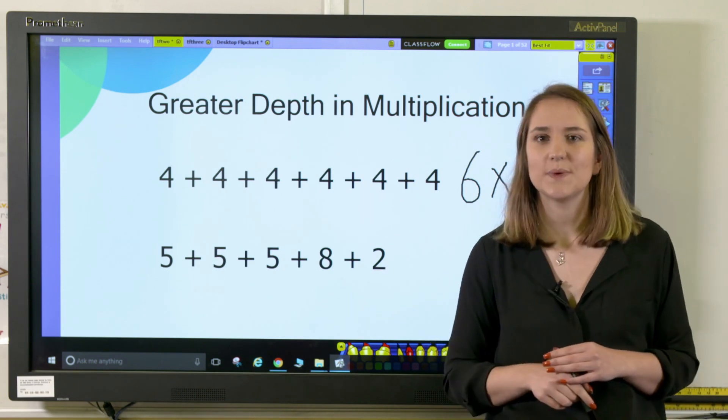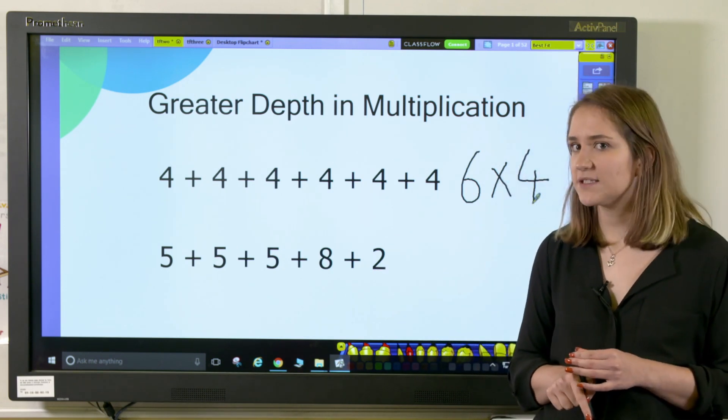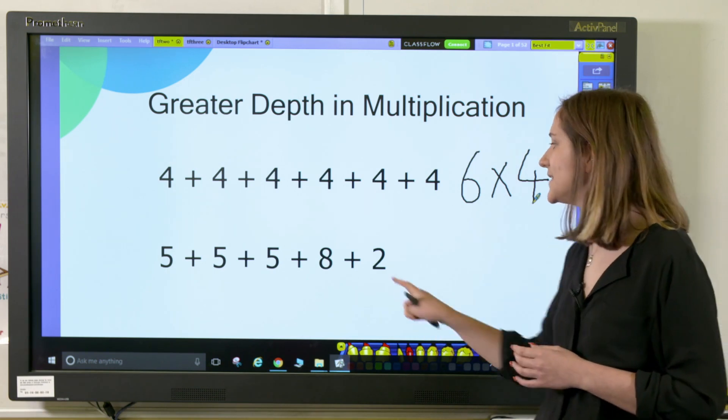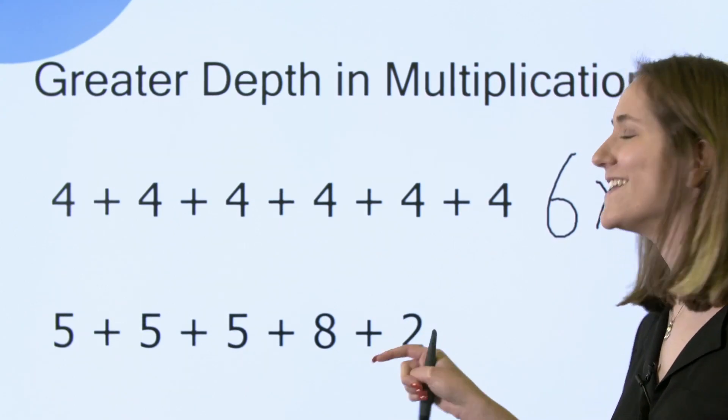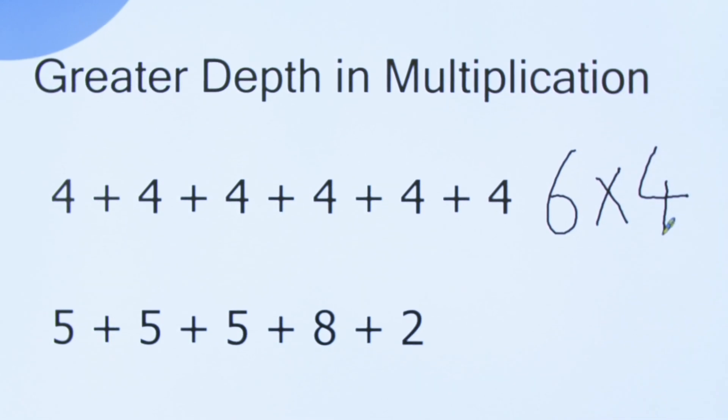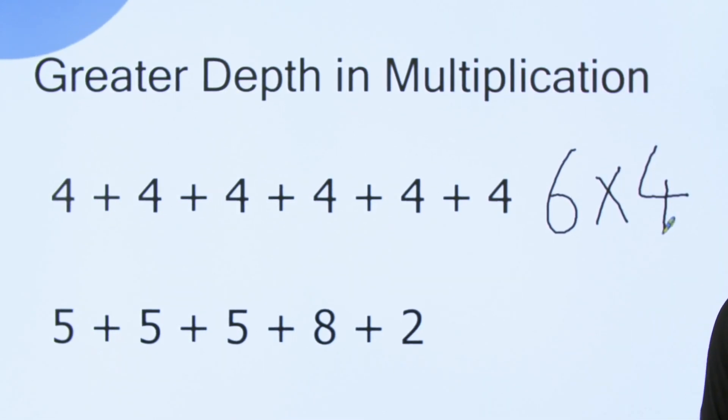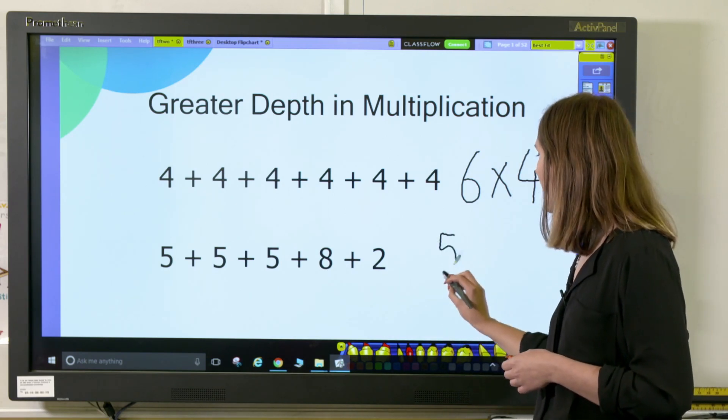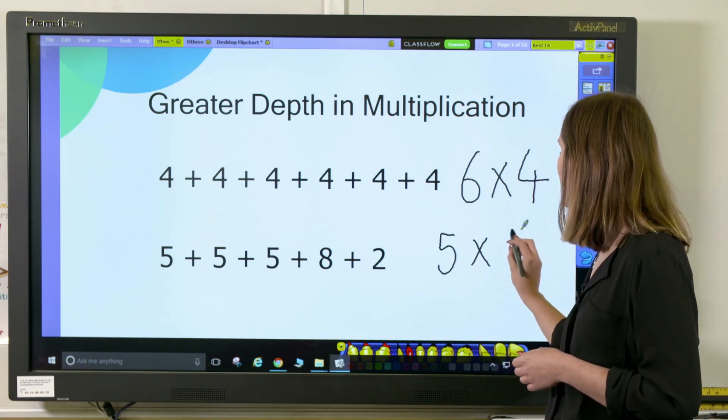This second example is a little bit trickier. You may wish to ask your pupils how many fives can you spot. They must notice that the eight and the two together add together to make ten, so that's another two fives. So altogether I have five fives, so I can write that as five multiplied by five.